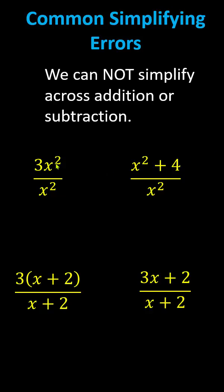For example, if we have three x squared divided by x squared, this does simplify because the three and the x squared in the numerator are attached by multiplication. x squared divided by x squared simplifies to one, so the expression simplifies to three.